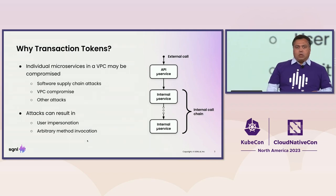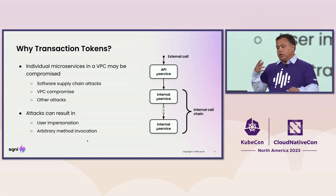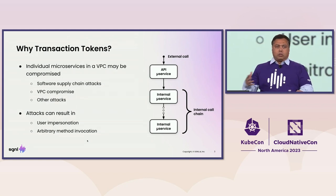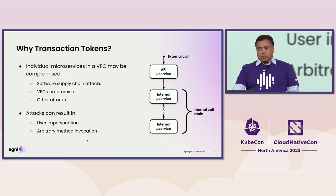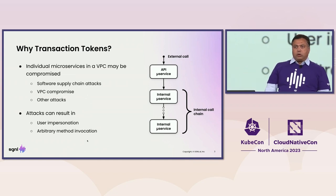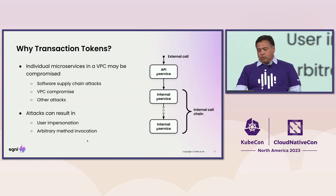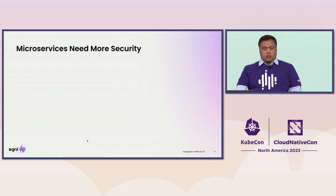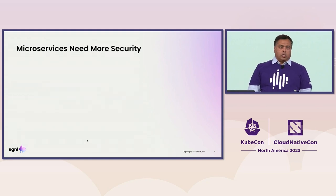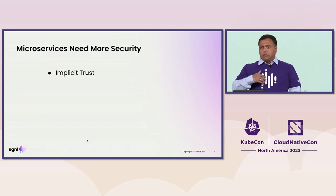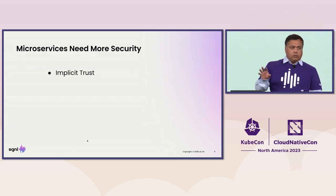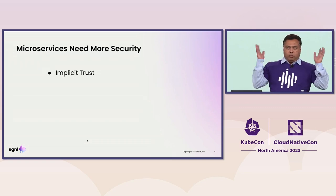Unfortunately, there are a lot of attacks possible where a VPC might be compromised. Some of the recent, pretty damaging attacks have been as a result of compromise of privileged users that were compromising the VPCs of companies. This can result in user impersonation or arbitrary code execution — extremely damaging to any enterprise. So obviously we need to do more about security. Today, most commonly, people use implicit trust: if you're in the VPC, you can just call any service. Because you're in the VPC, you're trusted — which is not great.